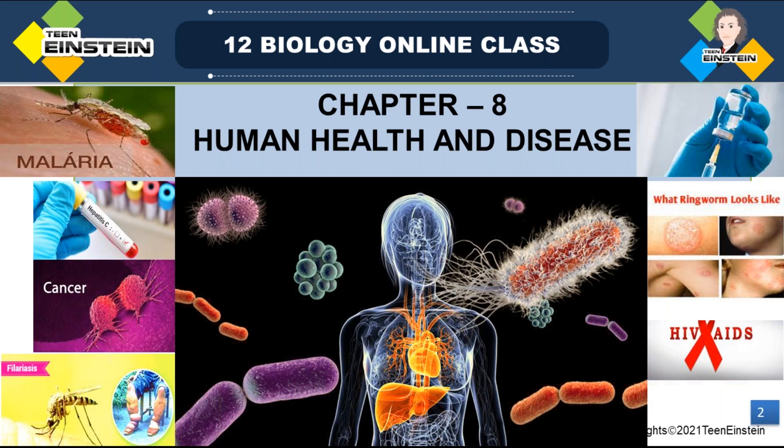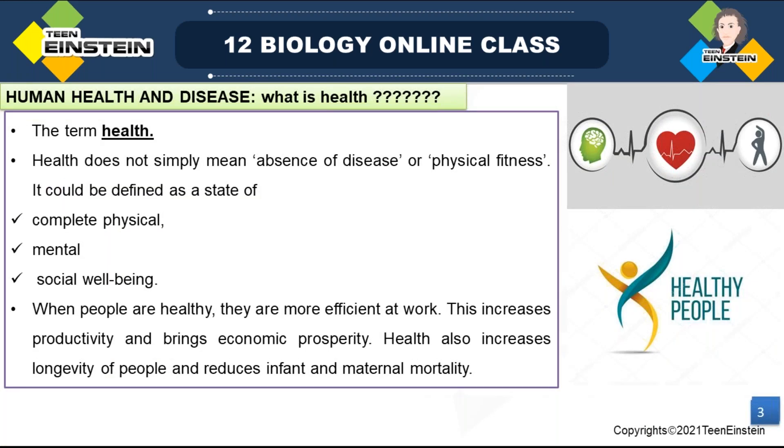In Chapter 8, Human Health and Diseases, we are mainly discussing common diseases seen in humans, then immunity, AIDS, cancer, and drugs and alcohol abuse. This is an important chapter for NEET — you may get MCQs on causative organisms, disease cycles, and vectors. This chapter has more weightage than the evolution chapter.